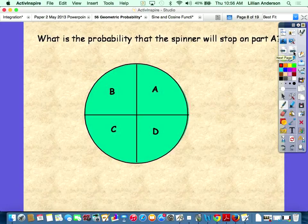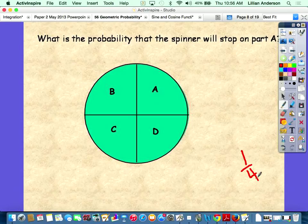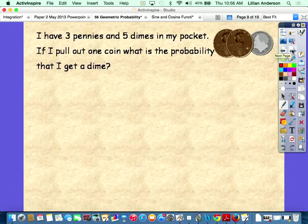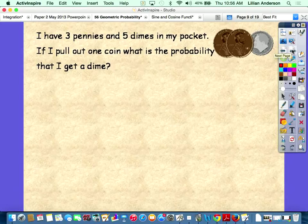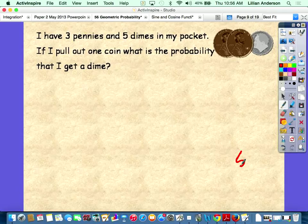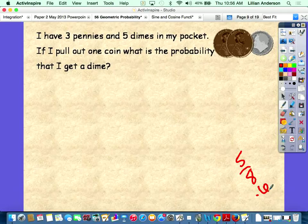What's the probability a spinner will stop on part A? 1 out of 4, or 0.25. I have 3 pennies and 5 dimes in my pocket. If I pull out a coin, what is the probability that I get a dime? 5 out of 8. Or 0.625.